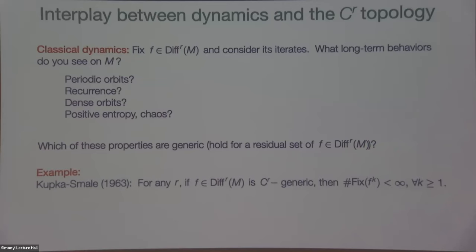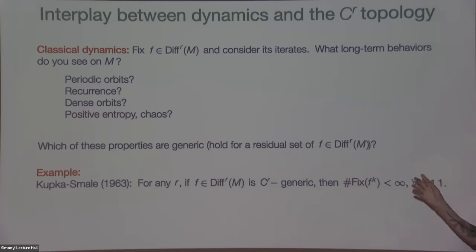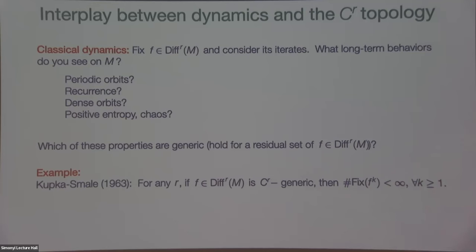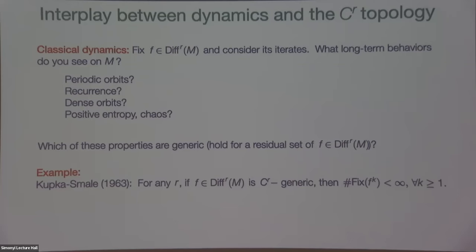There are known properties that hold for a generic dynamical system, though not very many. The most famous is the Kupka-Smale theorem, going back to early work of Steve Smale in attempting to classify diffeomorphisms. It says: in any C^R topology, if I take a generic diffeomorphism — one belonging to a residual set — and look at the number of fixed points of the k-th iterate, that number is finite. Generically, periodic points for a diffeomorphism of fixed period are isolated; in particular, there are only countably many periodic orbits. In fact, those periodic orbits are hyperbolic, meaning the derivative of the return map has all eigenvalues off the unit circle.